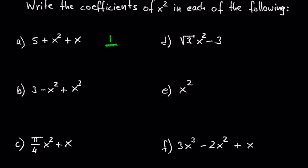In B we have 3 minus x squared plus x cubed. The coefficient is negative 1. In C we have p over 4 times x squared plus x. The coefficient is p over 4.